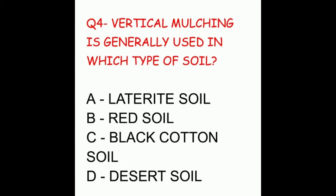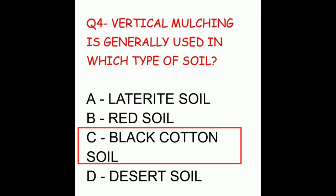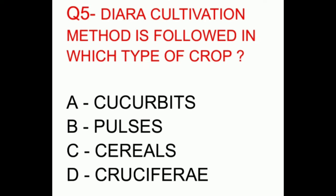Question four: vertical mulching is generally used in which type of soil? The options are laterite soil, red soil, black cotton soil, or desert soil. The correct answer is black cotton soil.